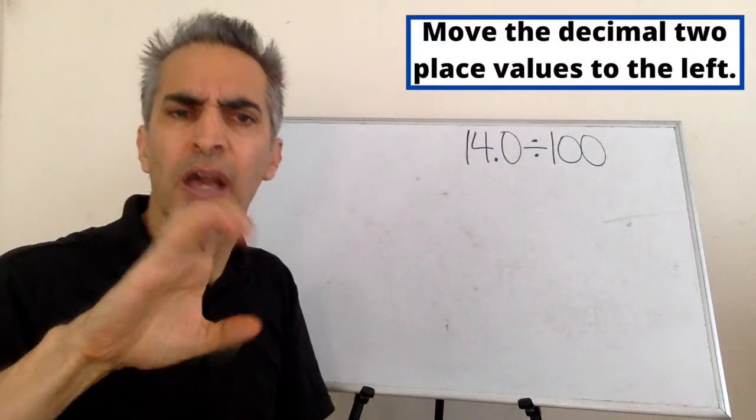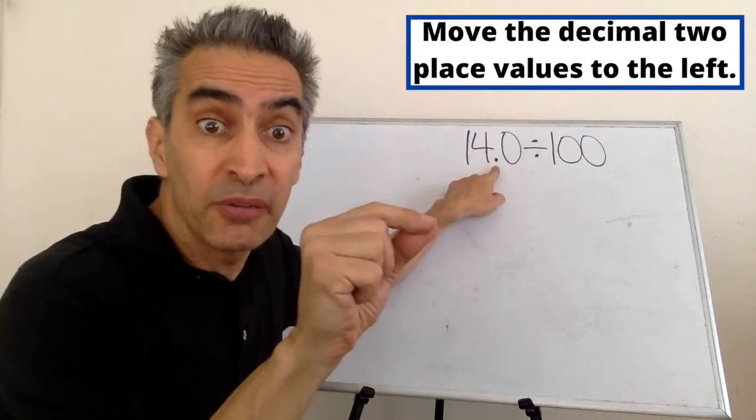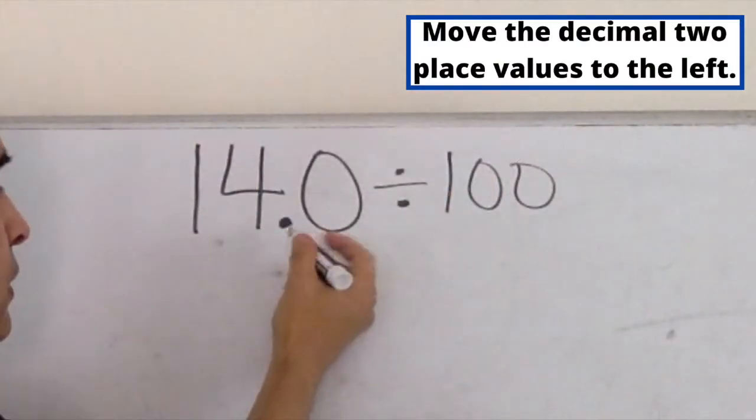How do we divide by 100? See this decimal point? We just move it to the left two spaces.